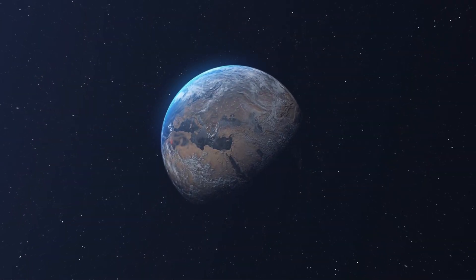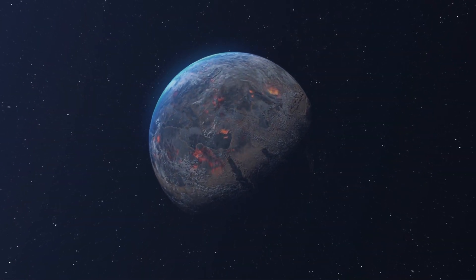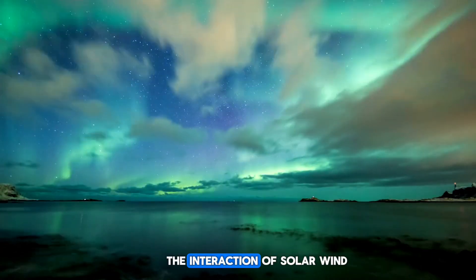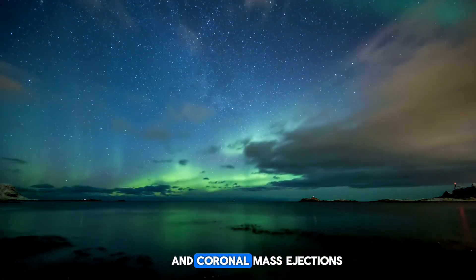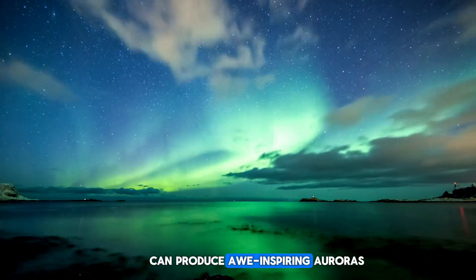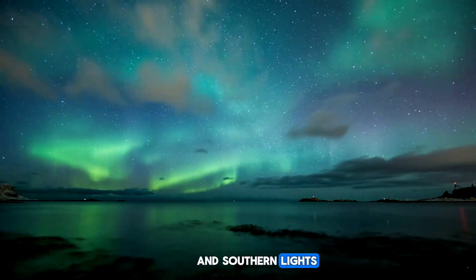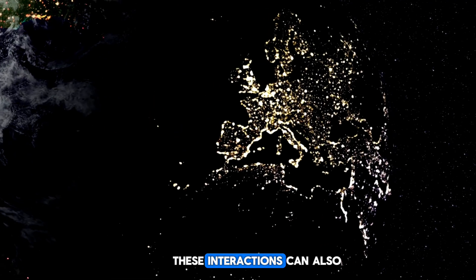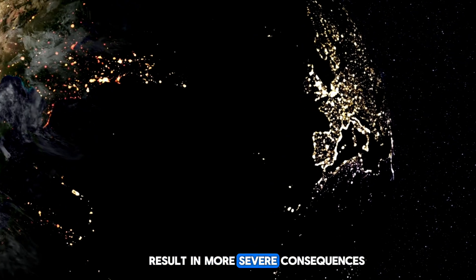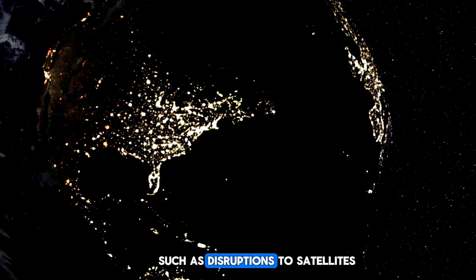Concerning Earth, the effects of space weather are not only captivating but also extensive. The interaction of solar wind and coronal mass ejections with Earth's magnetosphere can produce awe-inspiring auroras, commonly recognized as the northern and southern lights. However, these interactions can also result in more severe consequences, such as disruptions to satellites, communication systems, and even power grids.